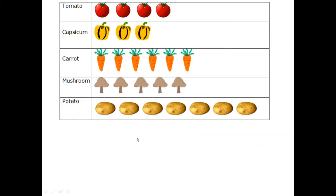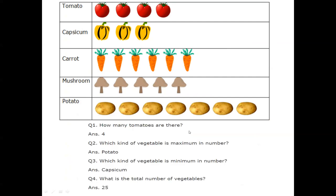Here they have shown vegetables and asked some questions. How many tomatoes are there? There are 4 tomatoes. Which vegetable is maximum in number? Potatoes is maximum. Which vegetable is minimum in number? Capsicum. What is the total number of vegetables? Adding all: potatoes 4, capsicum 3, carrot 6, mushroom 5, and potatoes 7 gives a total of 25.